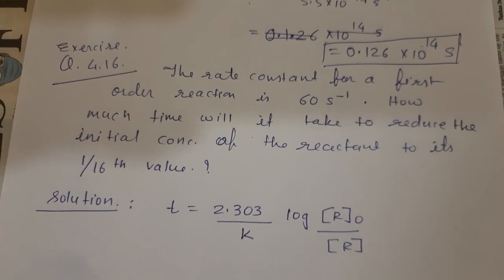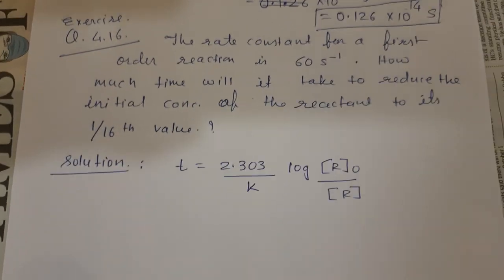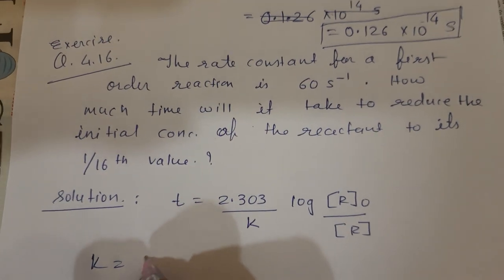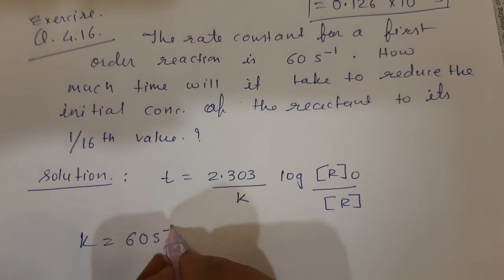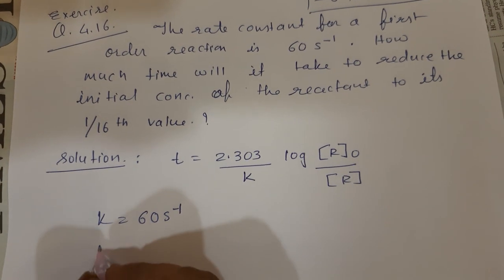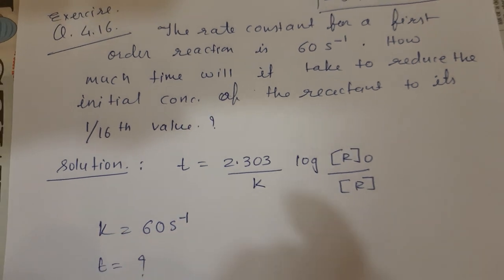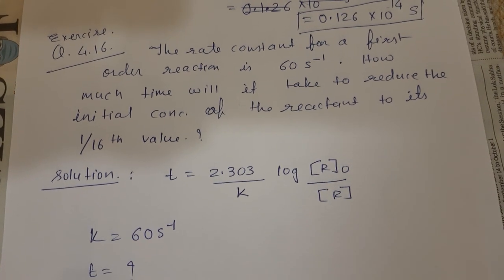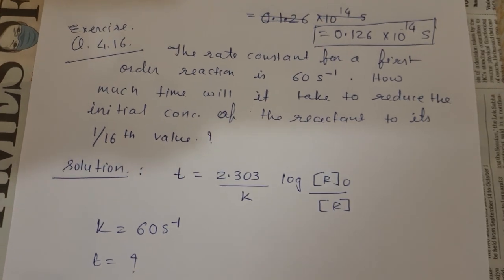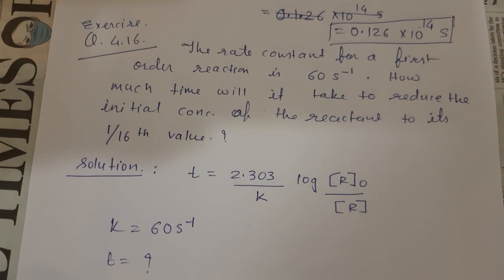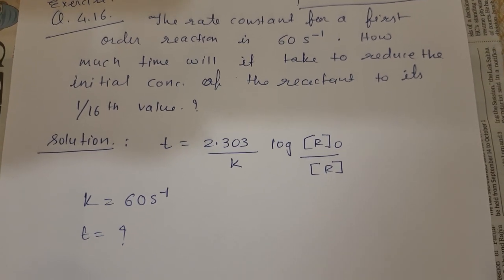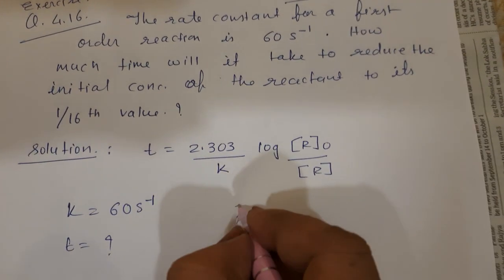Let me answer this. The rate constant k is given as 60 second inverse. We need to find the time t. If the initial concentration is x, then the final concentration is x upon 16. So initial concentration equals x, therefore final concentration is x upon 16.